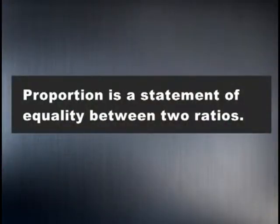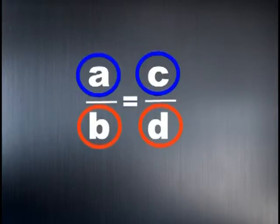Now let's look at the definition of proportion. Proportion is a statement of equality between two ratios. Four quantities A, B, C, D are said to be in proportion if A over B equals C over D. Before we go on to dividing a quantity into a ratio, let me get us something to drink. Thank you. It's a pleasure, Sam.